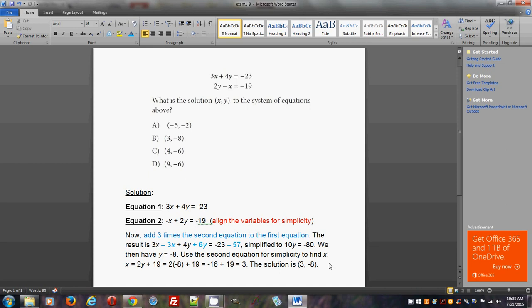Now this problem is a system of linear equations problem. It gives you two linear equations making up a system. And in this system it is given that there is a solution to the system. There's a point, there's one shared point between these two lines that these two equations represent. Because they're asking you what is the solution (x,y) to the system of equations above, you already know that there must be a solution.